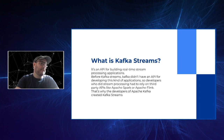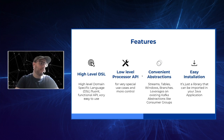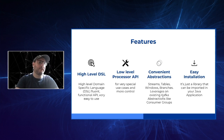So what are its main features? It has a high-level domain-specific language. It's a fluent, functional API, very easy to use. It also has a low-level processor API for very special use cases when you need more control. It has very convenient abstractions like streams, tables, time windows, branches. It leverages on existing Apache Kafka abstractions as well, like consumer groups. And it's also very easy to install — it's just a library so you can import it in any of your Java applications.